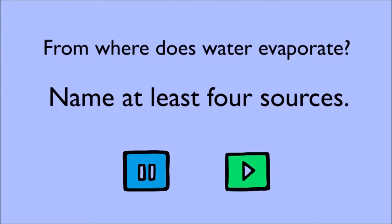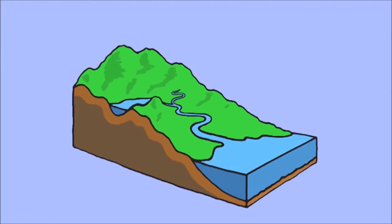Some correct answers include any body of water, from a puddle to a pond, from a pond to a lake, from lakes to rivers, and from rivers to seas. All of these act as bodies of water that can be evaporated. The water is turned into a vapor and goes into the air.